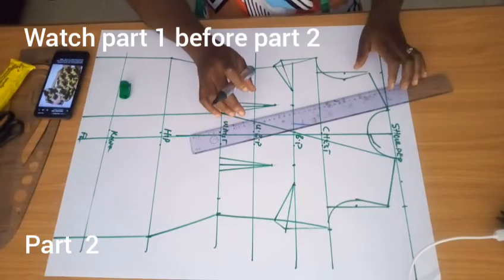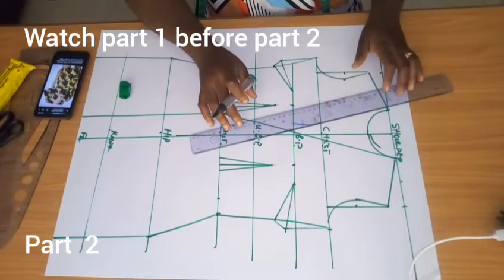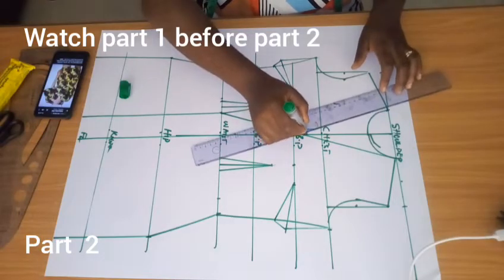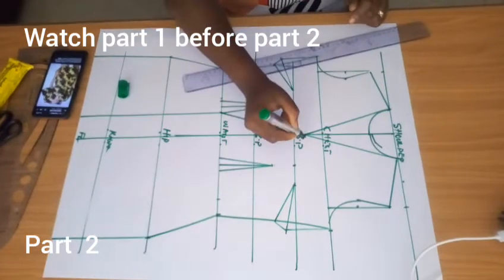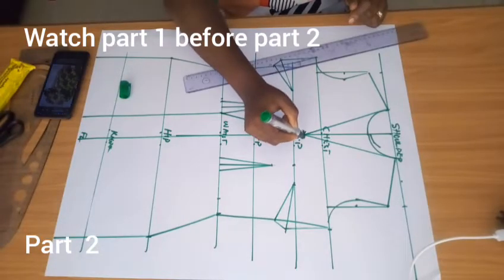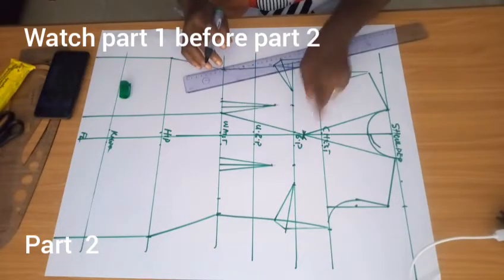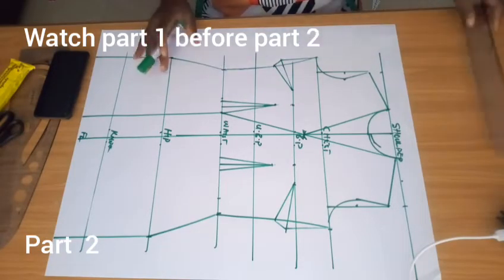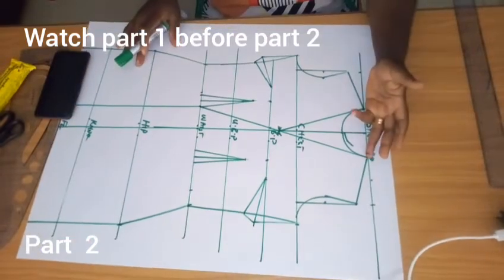I'm bringing back this neckline back to where it meets the center front to form the V, and you see that. So at this point, I'm putting my arrow. That is where the neckline is going to be joined. And we are done with this dress right now.